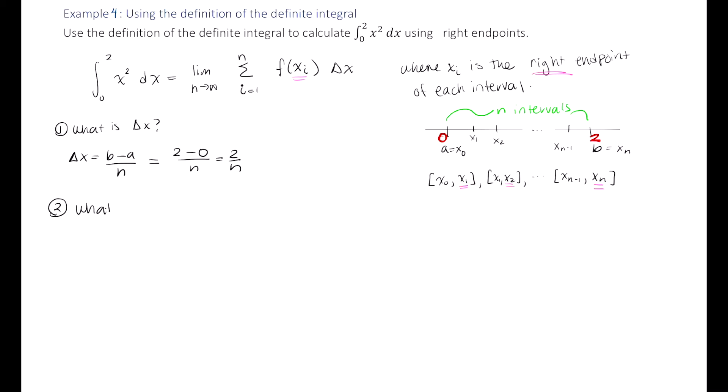Next, we need to determine, what are the right endpoints? Well, let's look at this number line we sketched already. And in fact, just to make things easier, I'm going to sketch it again. So we're starting off at x naught equals 0, and we're going all the way to xn equals 2. And I'm breaking this up into n intervals.